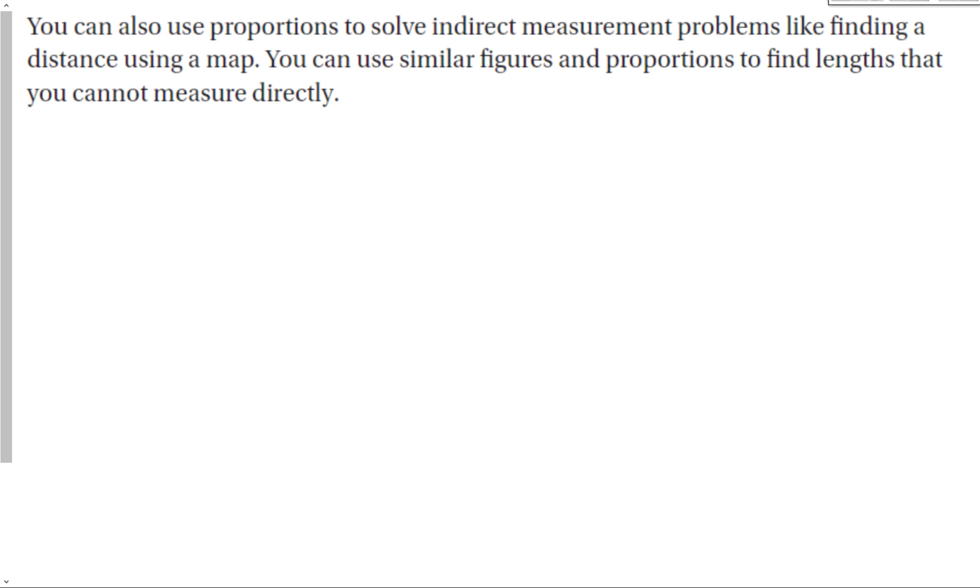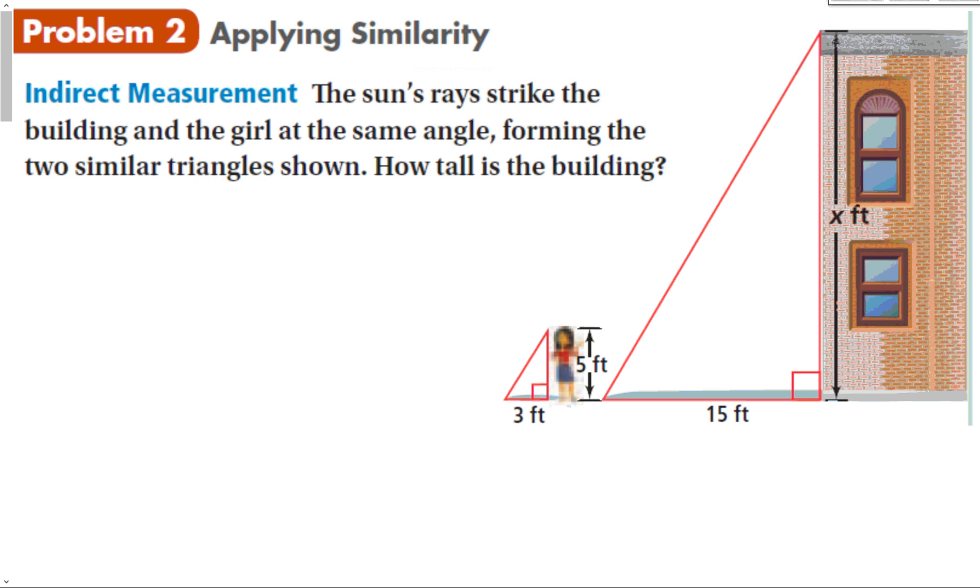We can also use proportions to solve indirect measurement problems like finding a distance using a map. You can use similar figures and proportions to find lengths that you cannot measure directly. For instance, this person who is standing next to a building. The sun's rays strike the building and the girl at the same angle, forming two similar triangles. How tall is the building?